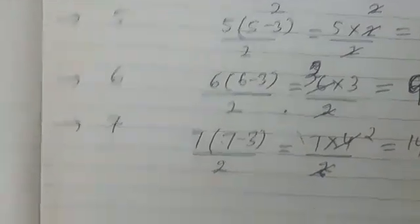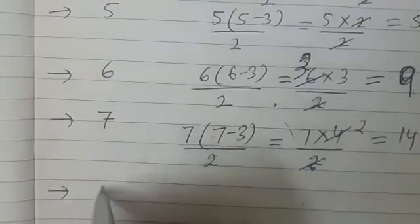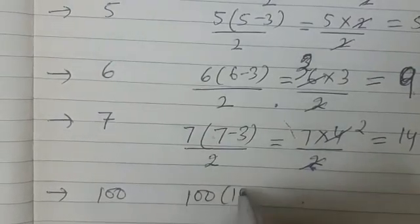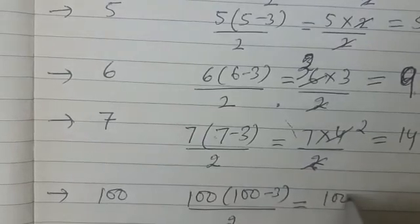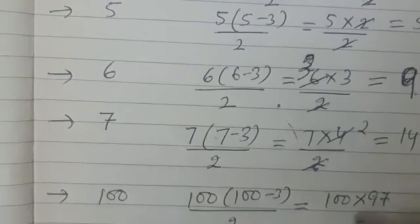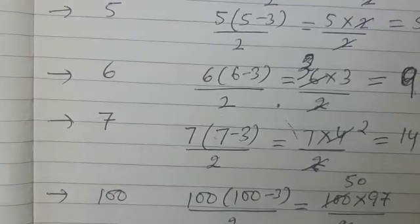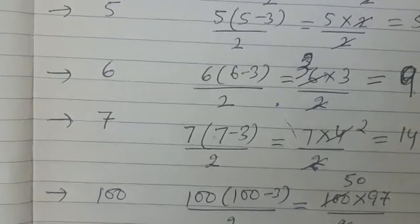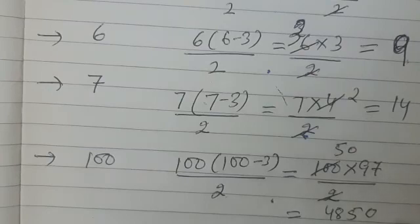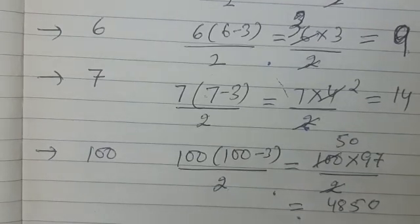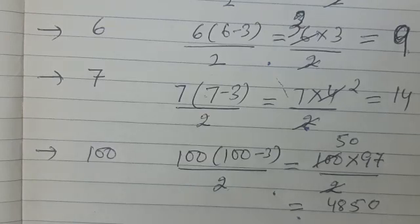If it is a 100-sided polygon, then 100 × (100 − 3) / 2 = 100 × 97 / 2 = 50 × 97 = 4,850 diagonals. Amazing! You don't have to draw this manually. You can verify the formula up to a 7-sided polygon and see that it is quite useful for calculating the number of diagonals. I hope this concept is clear to all of you. Have a nice day. Bye bye.